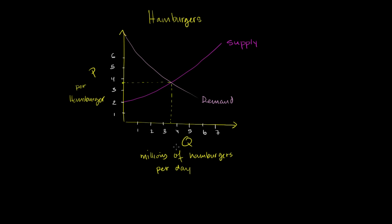Just to review what we've talked about before: up here, below the demand curve and above the price line at $3.75, this is how much benefit the consumers are getting above and beyond what they have to pay. So that is the consumer surplus. And then between the $3.75 price line and the supply curve, you have your producer surplus — how much more the producers are getting for each hamburger relative to their opportunity cost of producing that incremental hamburger.